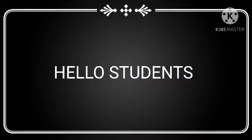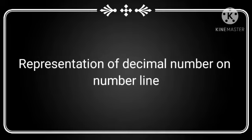Hello students! In part 3, we learnt how to represent the irrational number on a number line. In this video, we will learn how to represent the decimal number on a number line. Decimal number means here we are talking about rational numbers — fractions written in decimal form. So now, let's see how to represent the decimal number on a number line.